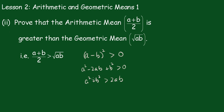Now here I'll complete the square by adding 2ab to both sides. So we'll get a squared plus 2ab plus b squared is greater than 4ab. That's a perfect square.